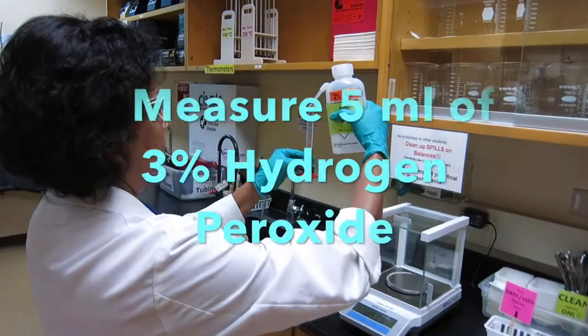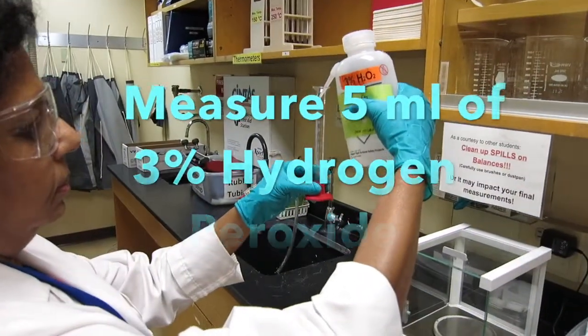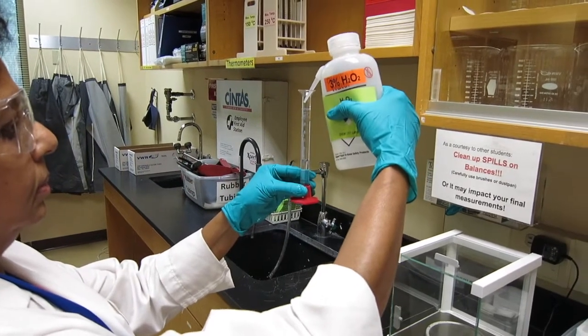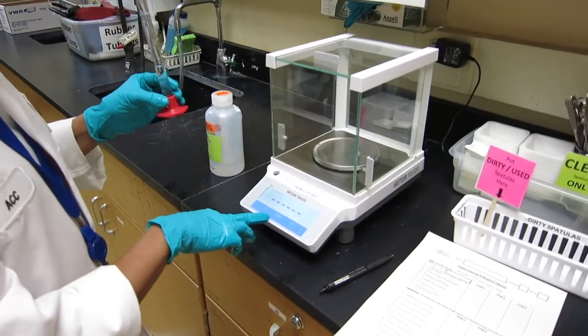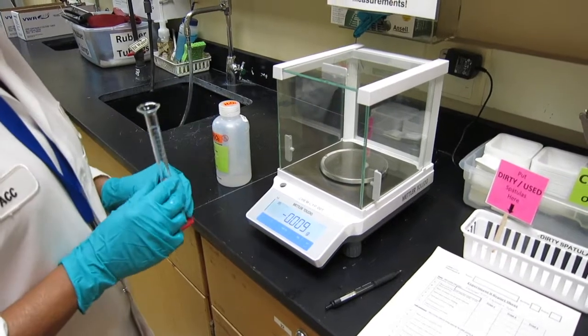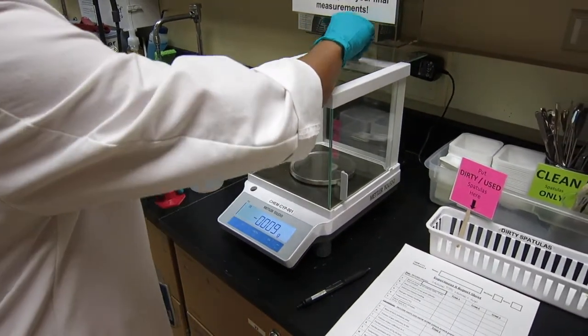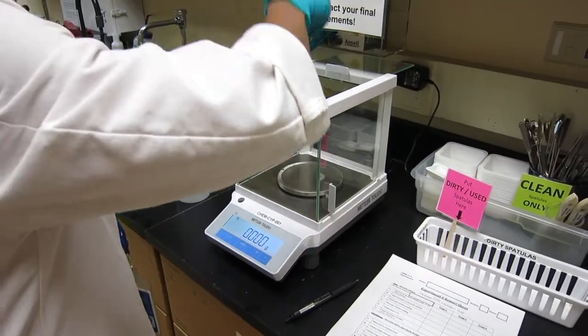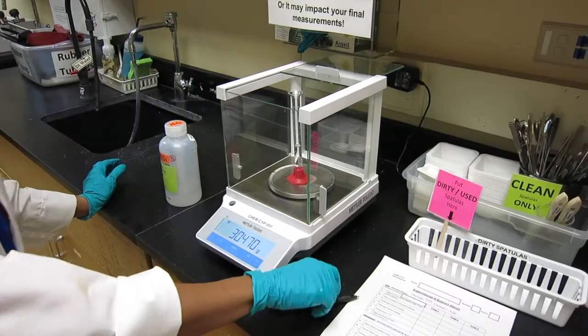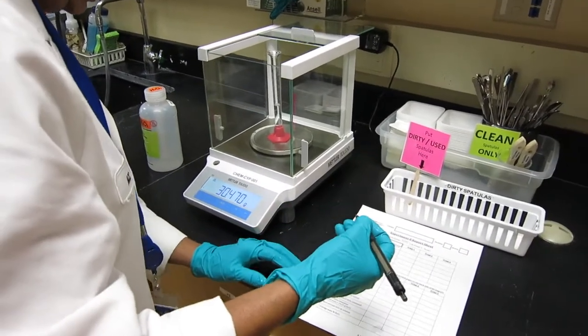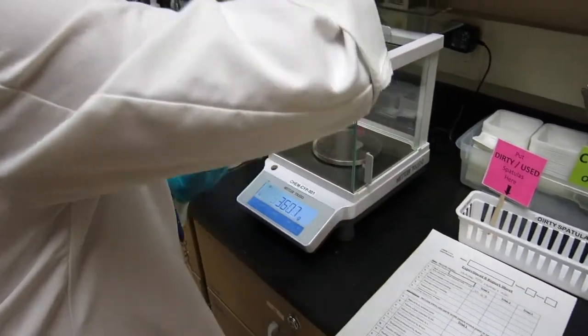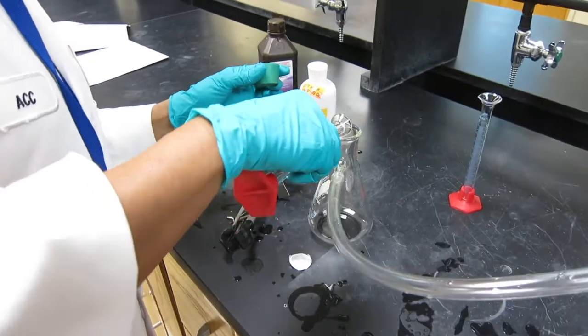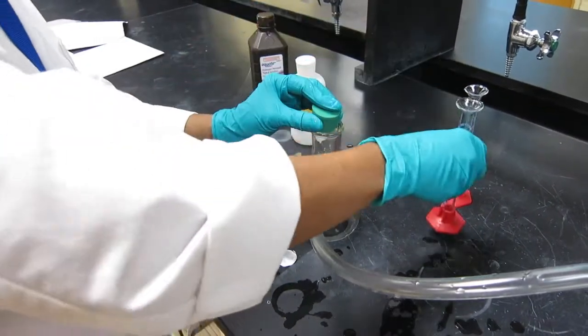So we're going to measure five milliliter of the hydrogen peroxide, the three percent. And we're going to weigh it, first tare it, zero it, and then we measure that. And then we're going to pour that into the flask and immediately cap it.